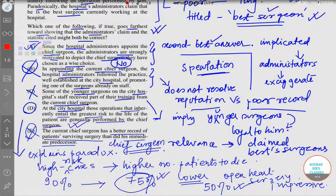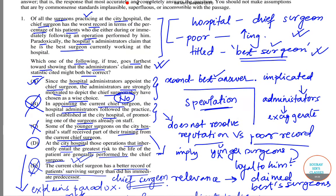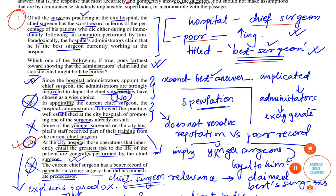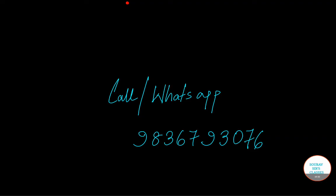So the correct answer to this particular question — which actually explains the paradox of administrators giving him the title of best surgeon as well as his poor record — can be explained well with option D. D is the correct answer to be picked. I hope this short tutorial on LSAT, where we are discussing section 1 of the paper and how to solve it, was helpful. In case there is any doubt, you are free to call or WhatsApp us on this particular number. Thank you so much for watching.